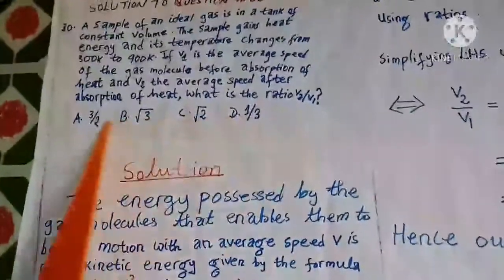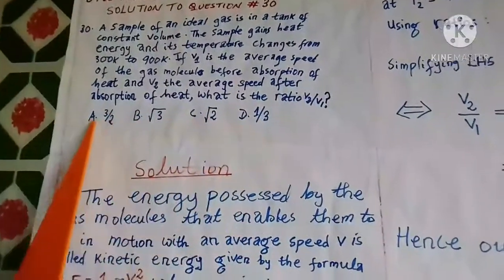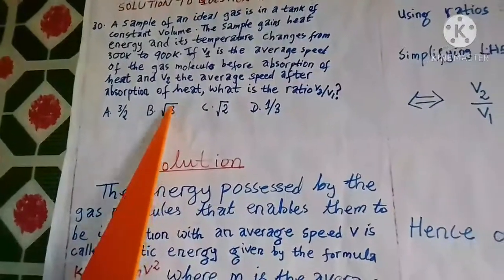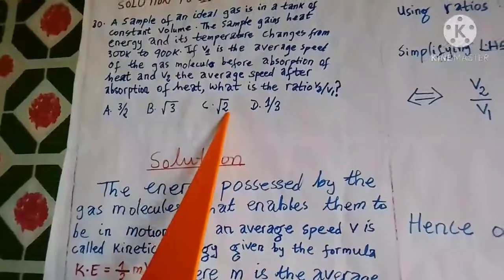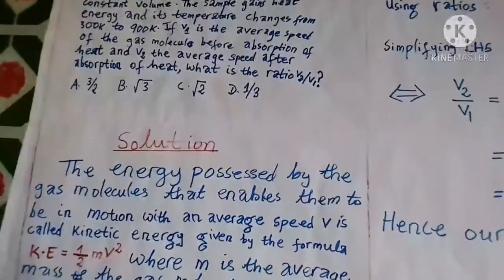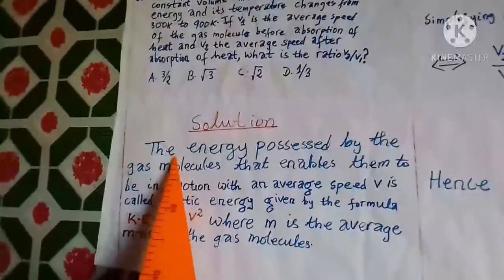These are the different answers we have, so we have four choices: A is 3/2, B is root 3, C is root 2, and D is 1/3.